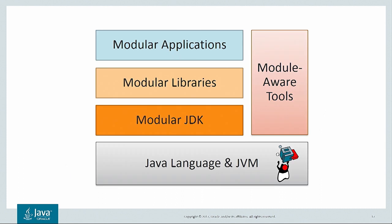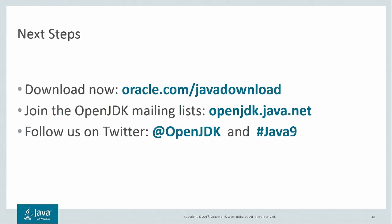To conclude, JDK 9 is important because it enables modular development all the way down. The Java language and the Java virtual machine understand modules very deeply so that the applications you write, the libraries you consume, and even the JDK itself can all be developed, tested, packaged, and deployed as modules with clear APIs and well-protected internals. Making everyone play by the same modular rules has great benefits for reliability, maintainability, and security, though it may take some time for popular tools and libraries to catch up. You can download JDK 9 now and follow development at OpenJDK, and follow us on Twitter at OpenJDK and hashtag Java9. Thank you very much.